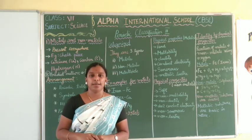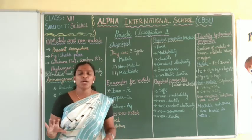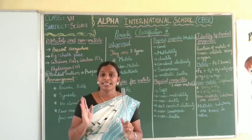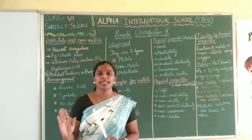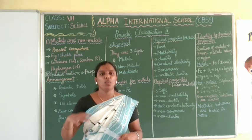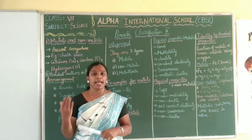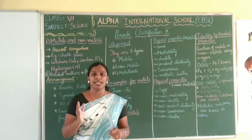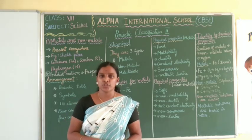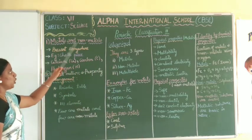In the periodic table, we are going to see about metals and non-metals. All the elements present are either metallic or non-metallic. We will see in detail what the properties and classification are, and how they are arranged — how we can identify whether an element is metallic or non-metallic. So shall we start? First we are going to see metals and non-metals.